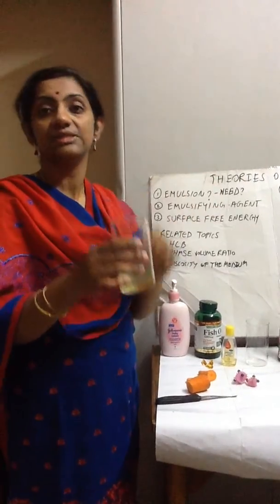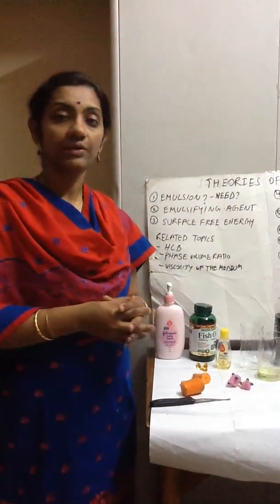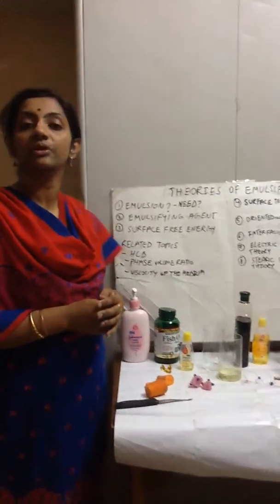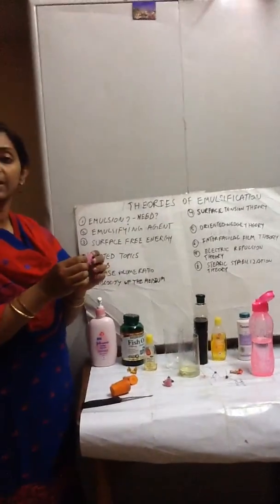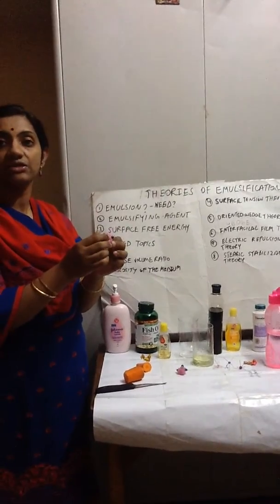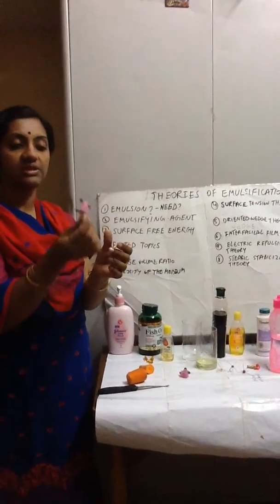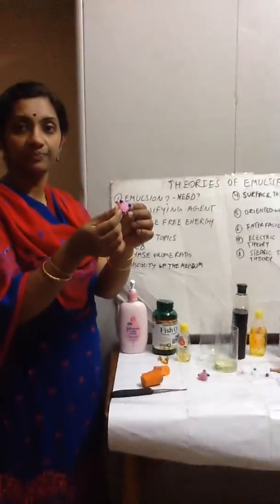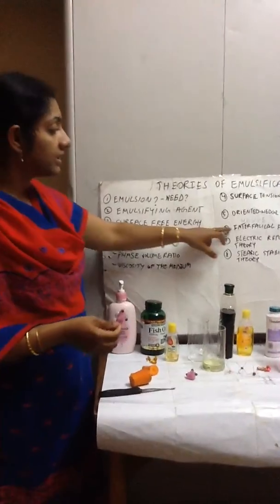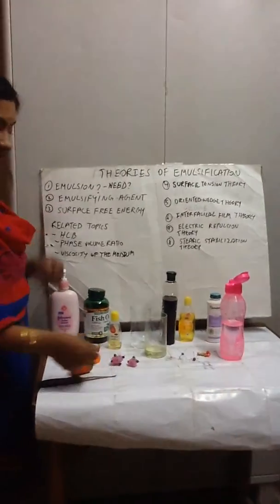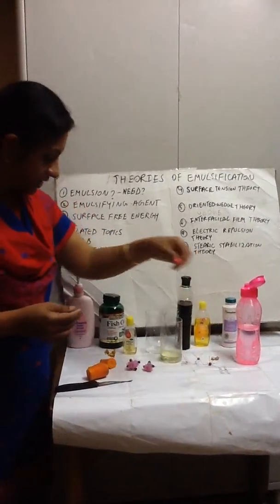The other theory is the oriented wedge theory, wherein the emulsifying agent will orient itself in a wedge shape and it will completely cover the globule. As you can see, the globule is covered. This is the oriented wedge theory.